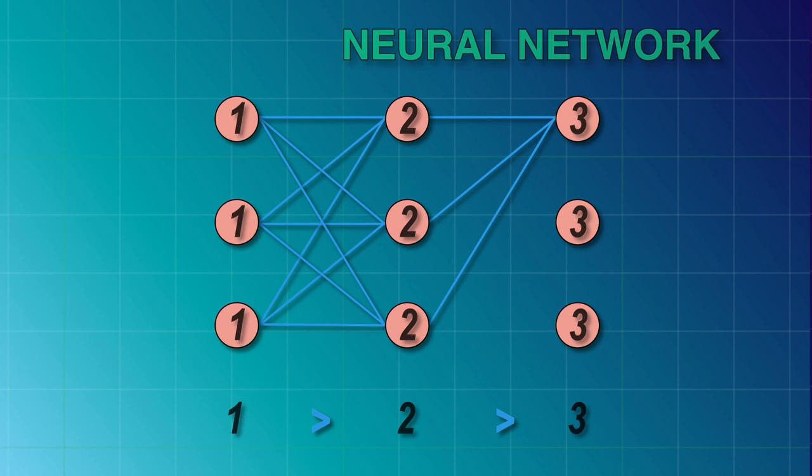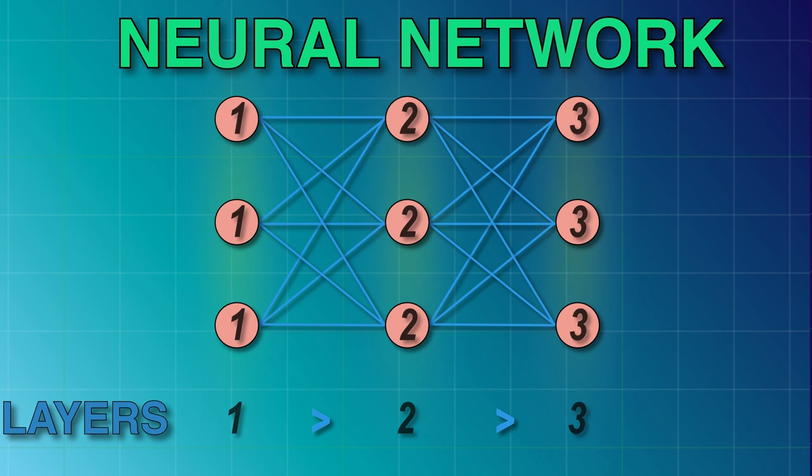And these neurons labeled with the same number are referred to as layers. In fact, our brain contains 86 billion neurons. So the network is much, much more complex than this.